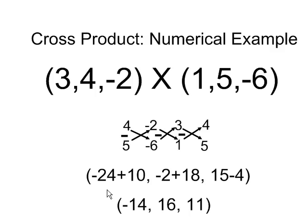Negative 24 plus 10 is my x-coordinate. Negative 2 plus 18 is my y-coordinate. 15 minus 4 is my z-coordinate. And there is the vector that is the result of that cross product calculation.